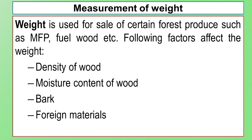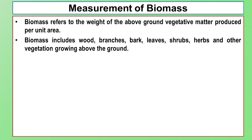Factors that affect weight include density of wood and moisture content of the wood, as well as foreign materials. The biomass refers to the weight of the above-ground vegetative matter produced per unit area. Biomass includes wood, branches, bark, leaves, shrubs, herbs, and other vegetation growing above the ground.